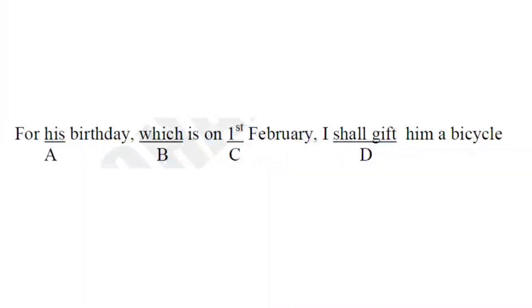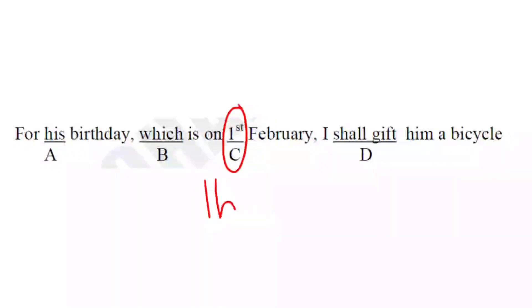The next sentence involves ordinal numbers. When ordinal numbers like 1st, 2nd, 3rd are used, the definite article 'the' must be used before them. For example: 'for his birthday, which is on the 1st of February' — 'the' is correctly used before the ordinal number. This sentence is correct; the error option is C, meaning option C is actually correct.